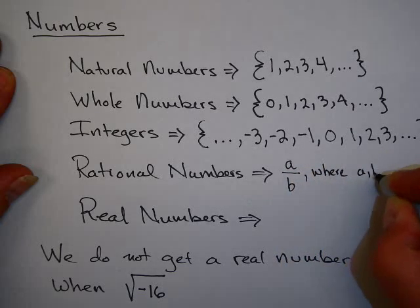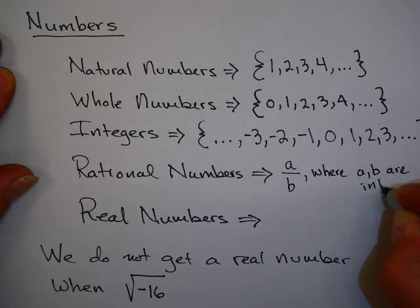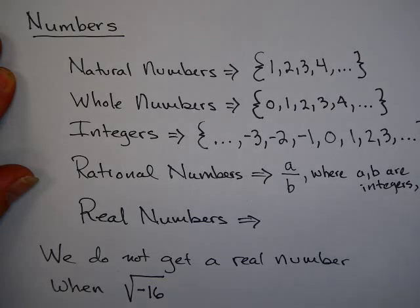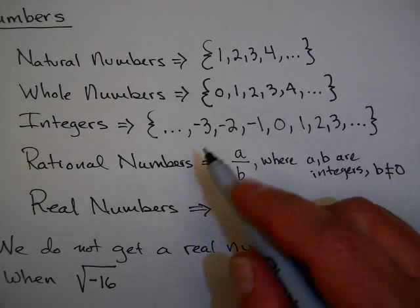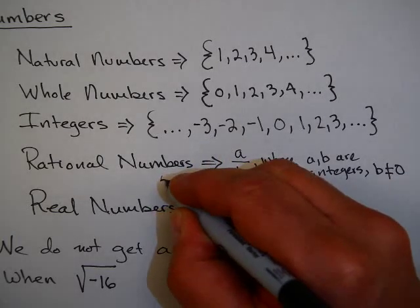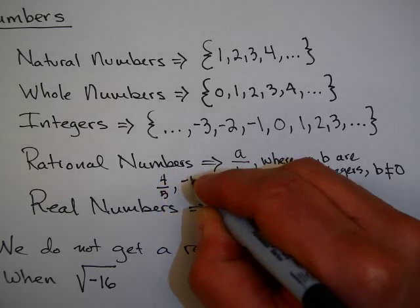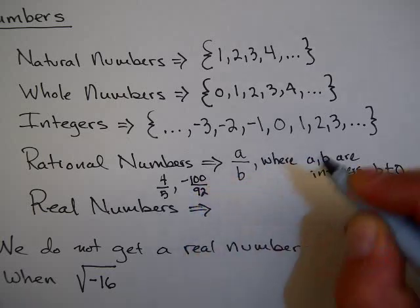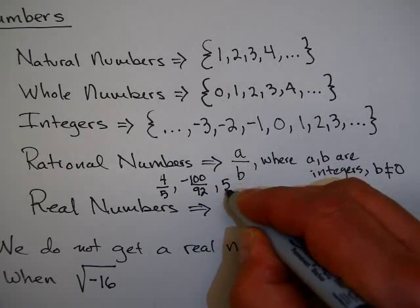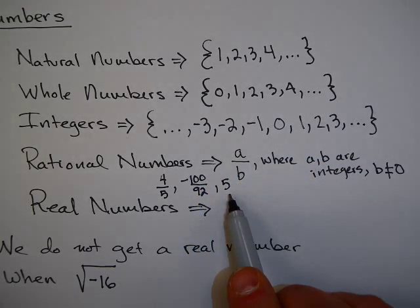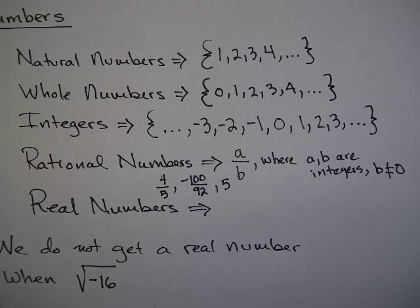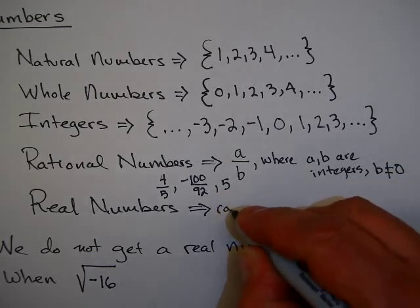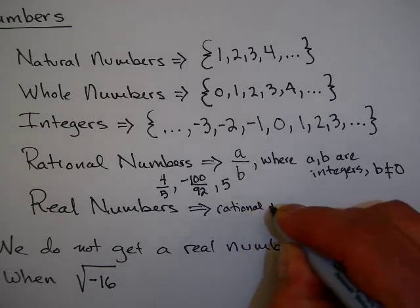Rational numbers are numbers that can be written in the form A over B, where A and B are integers, and B is not equal to 0. If B is equal to 0, we would be dividing by 0, and that's not allowed. So this is anything that can be written as a fraction, like 4 fifths, or minus 100 over 92, or even 5, because you can write 5 as a fraction, as 5 over 1, or 10 over 2. So all integers, whole numbers, and natural numbers are rational numbers.